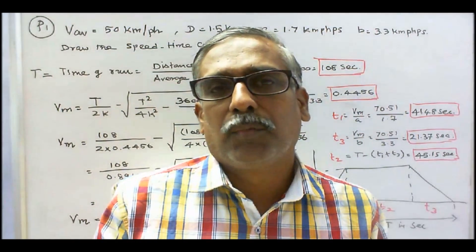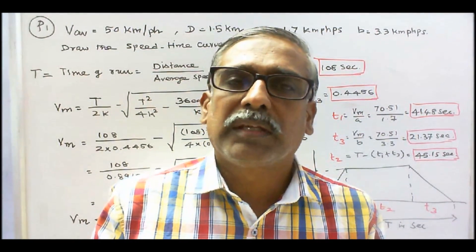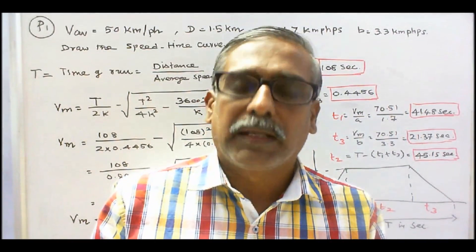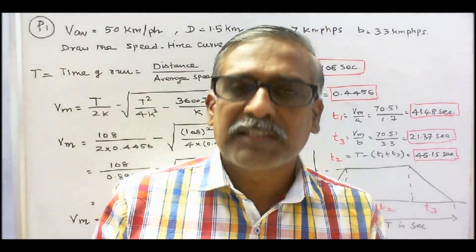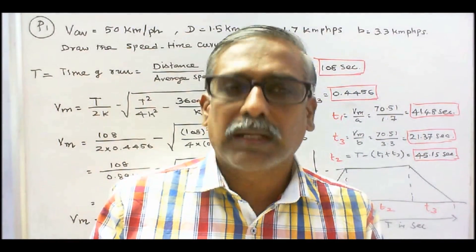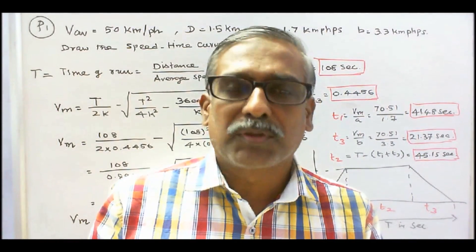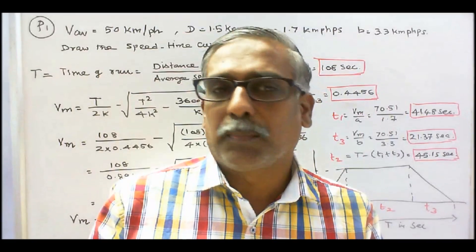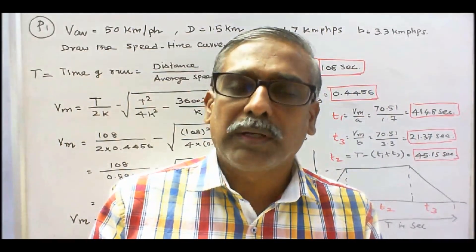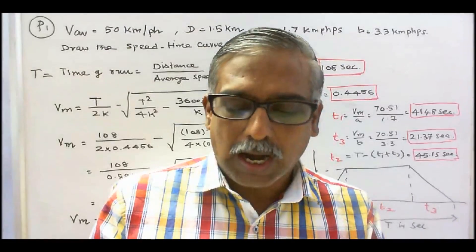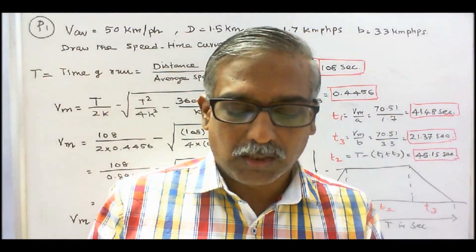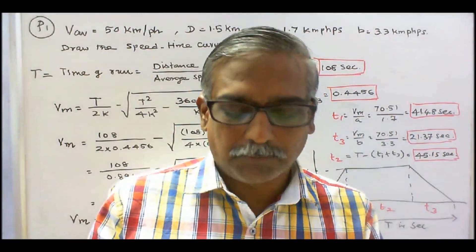In this class we work out some problems on speed-time curves. The first problem: an electric train has an average speed of 50 km per hour on a level track between stops 1.5 km apart. It is accelerated at 1.7 km per hour per second and braked at 3.3 km per hour per second. Draw the speed-time curve for the run.